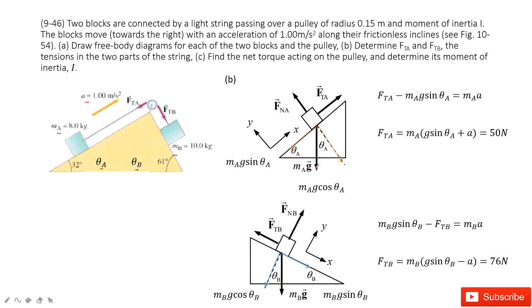In the X component, it has mAg sin theta A. In the Y component, mAg cos theta A. Therefore, we can write Newton's second law on the X component. On the X component, we have FTA minus mAg sin theta A equal to mass times acceleration. The acceleration is only on the X component.